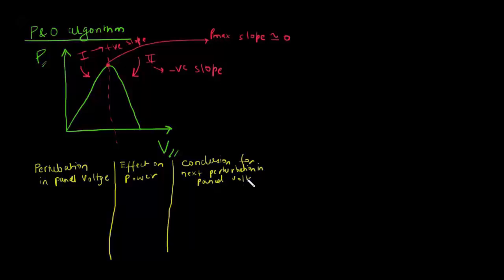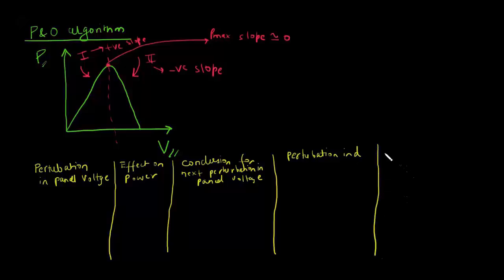The third column is the conclusion for the next perturbation in panel voltage, the fourth column is perturbation in duty cycle D, and the fifth column is perturbation in control voltage VC.